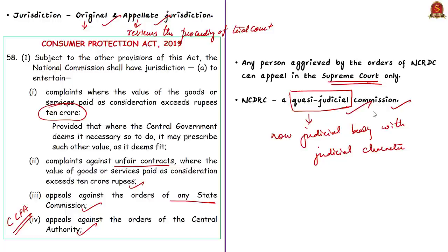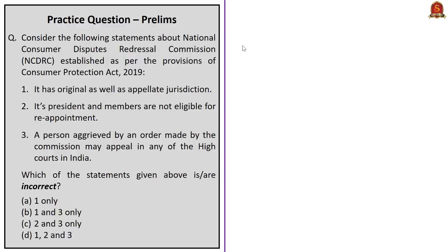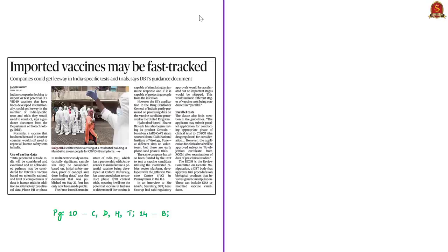Based on this discussion, we can say that NCDRC is a quasi-judicial commission. A quasi-judicial body is a non-judicial body which can interpret law and has partly judicial character because it can hold hearings and conduct investigations into disputed claims. These are some of the important points you should know about NCDRC. The practice question will be discussed in the last session.